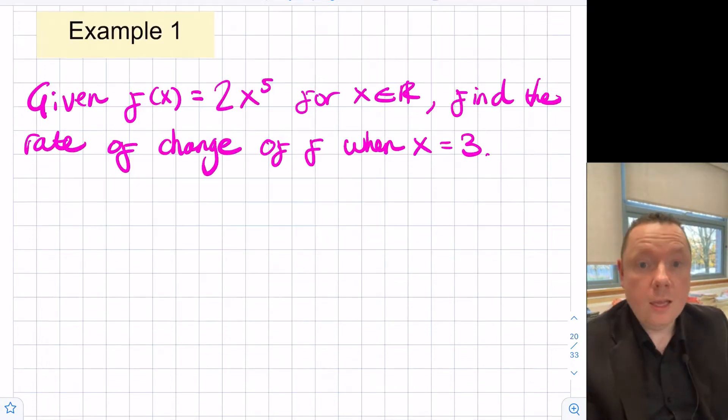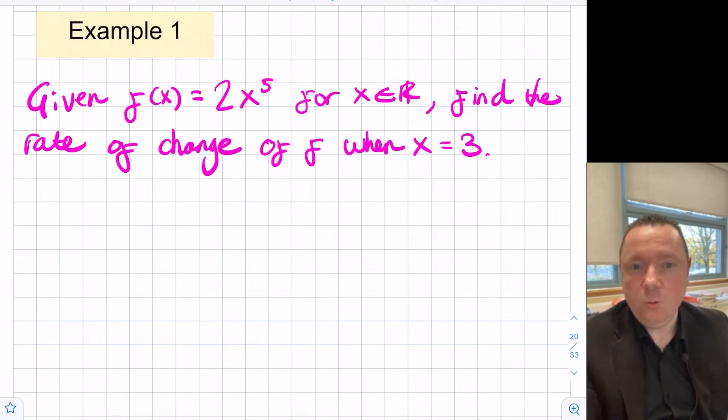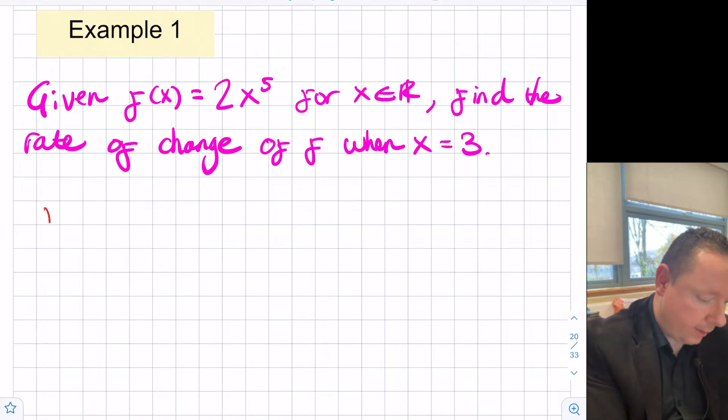Let's look at some examples. Okay, so the first example says, given that f of x is 2x to the power of 5, for x a member of real, find the rate of change when x equals 3. So this is nice and simple to start with. We can straight away say f of x is 2x to the 5. We need to differentiate it to find the rate of change.